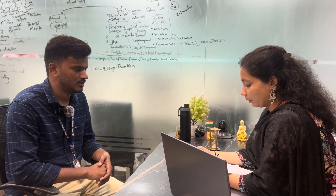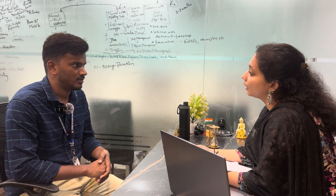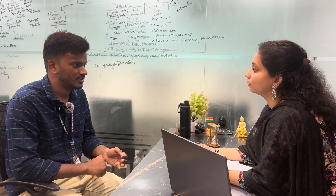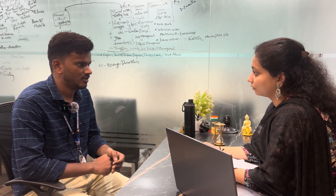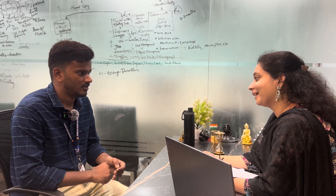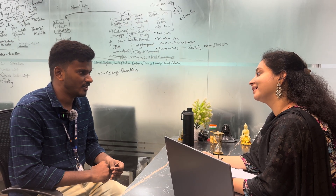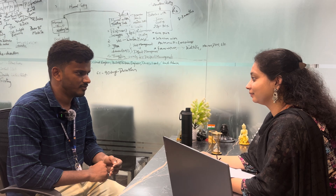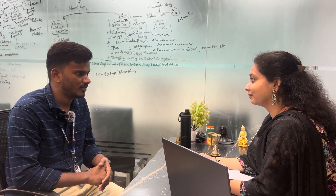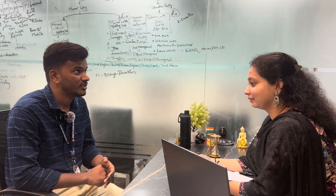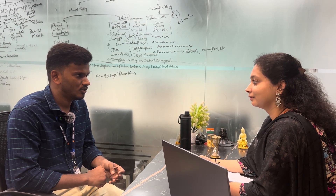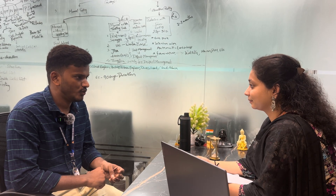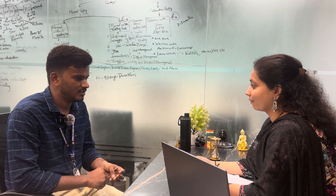Do you know about environments? Yes ma'am. How many environments are there? There are 5 types, and we have 3 versions in it. In the first version we have local and production. In the second version we have local, development, QA and production.